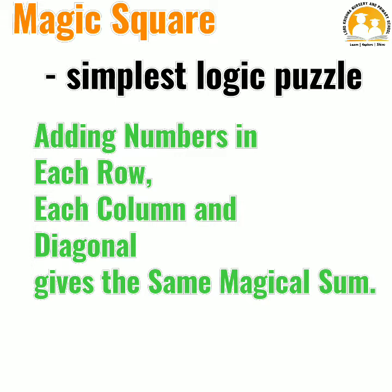It is a magic square. Given some set of numbers, we need to fill up the numbers in each cell of the magic square so that each row, each column and each diagonal adds up to the same number.